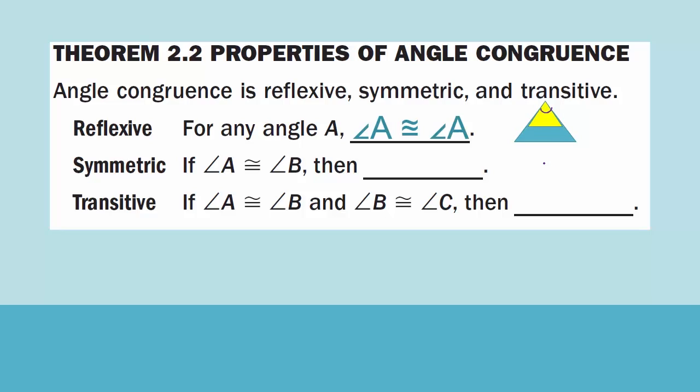Symmetric: if angle A is congruent to angle B, then we can switch places and say angle B is congruent to angle A. Transitive: if angle A is congruent to angle B and angle B is congruent to angle C, then we can get rid of the middle angle B and just say angle A is congruent to angle C.